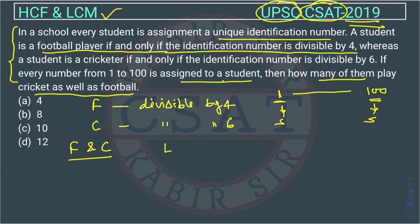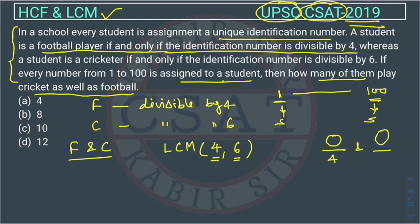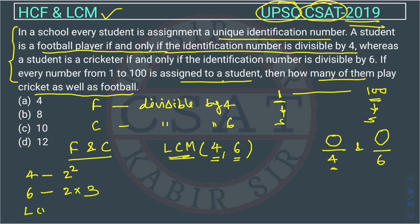We have to find the LCM of 4 and 6 — a number which is divisible by both 4 and 6. Since the number must be equal to or greater than both, we need the LCM. The factor of 4 is 2², and the factor of 6 is 2 × 3. So the LCM is 2² × 3 = 12. The LCM of 4 and 6 is 12, using the factor method.